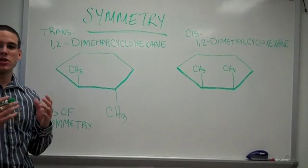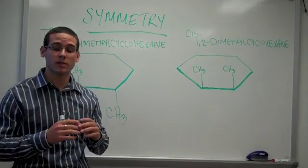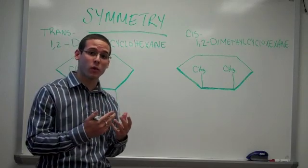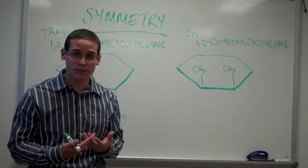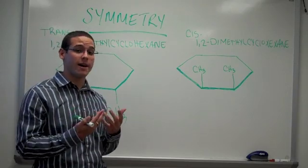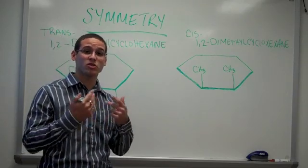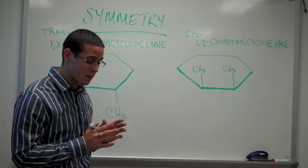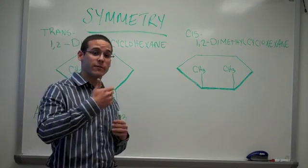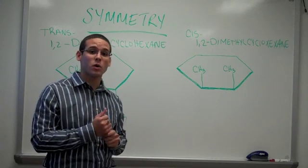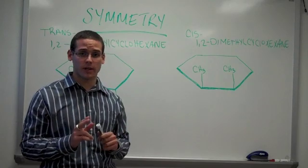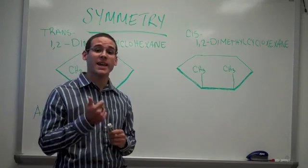Now that we understand that a chiral center contains four different atoms attached to it, and therefore the molecule is chiral. The same is not true when we have two or more chiral centers. So in order to distinguish compounds that contain two or more chiral centers, we should understand symmetry.